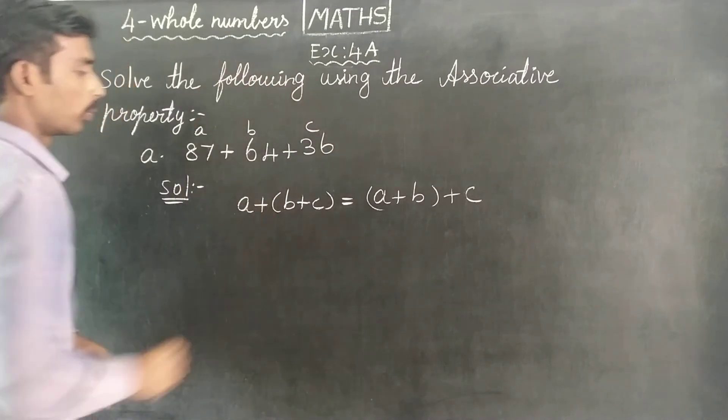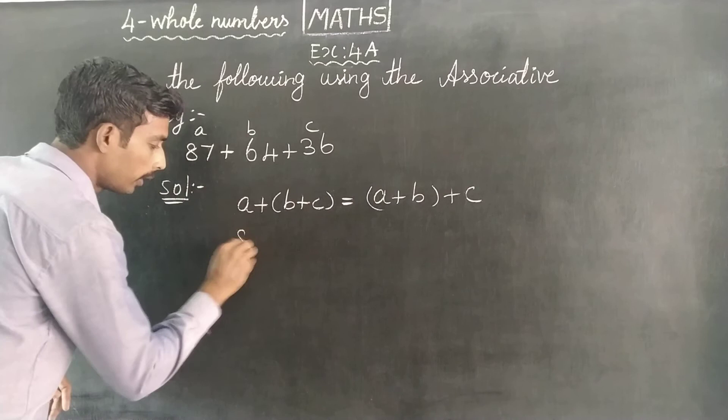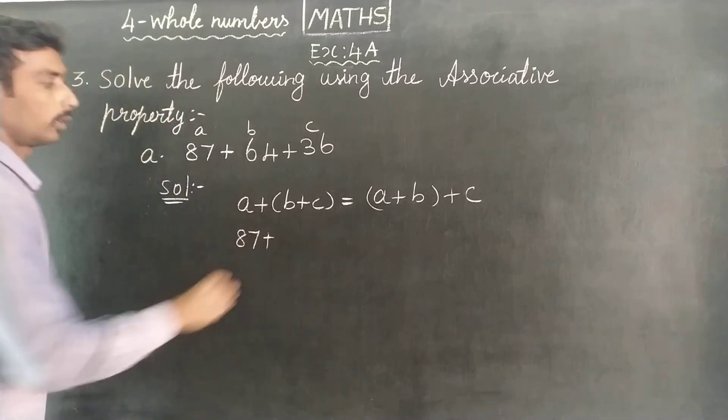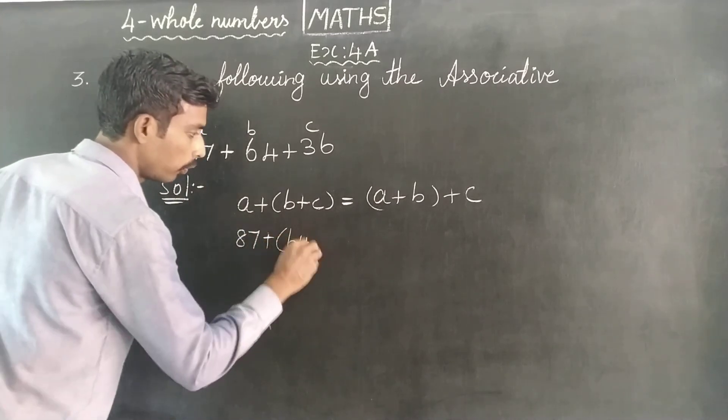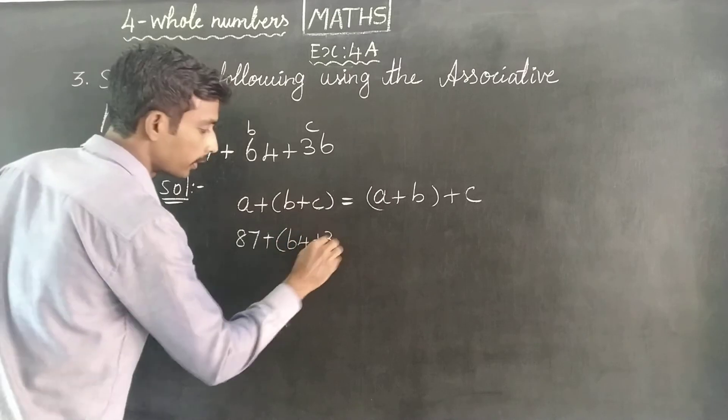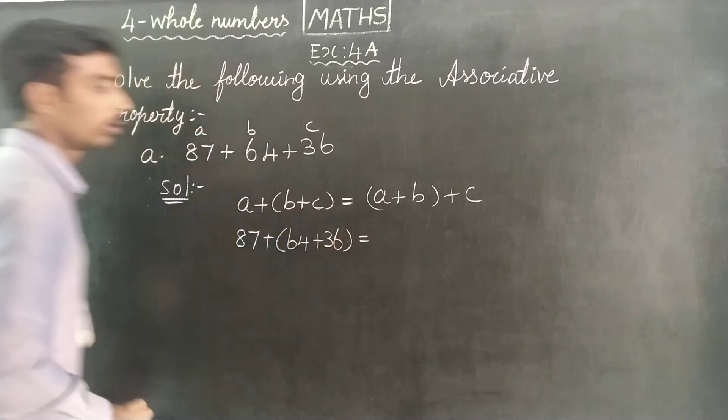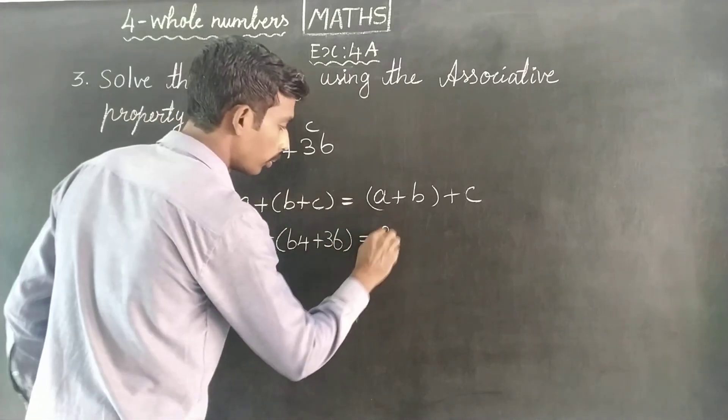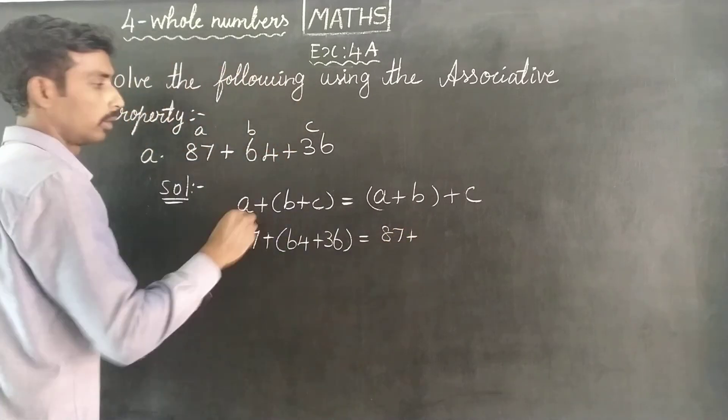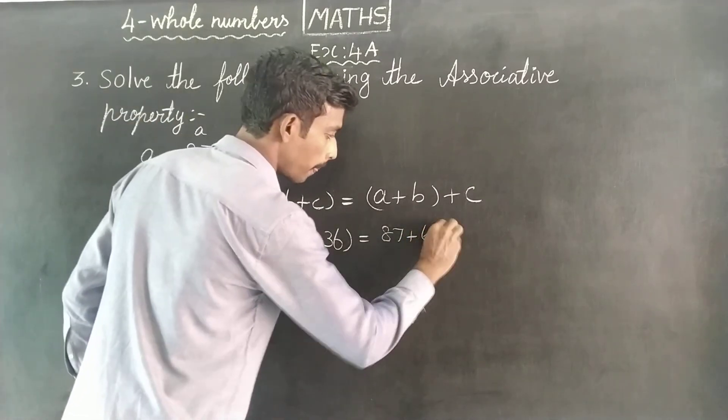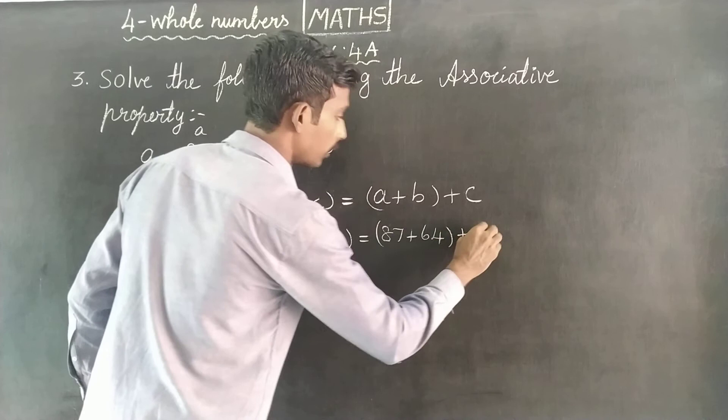You will have an answer. First of all, a is 87 plus b value is 64, c value is 36, equal a value is 87 plus 64 plus 36.